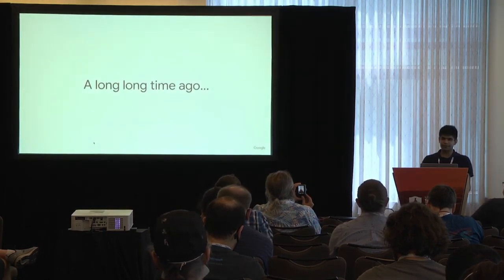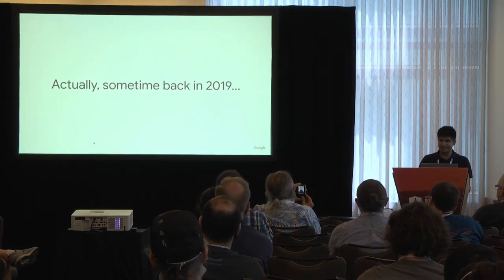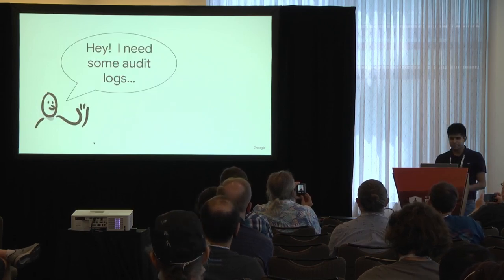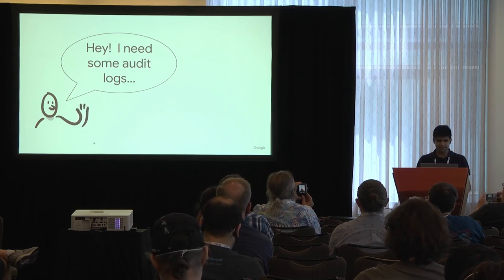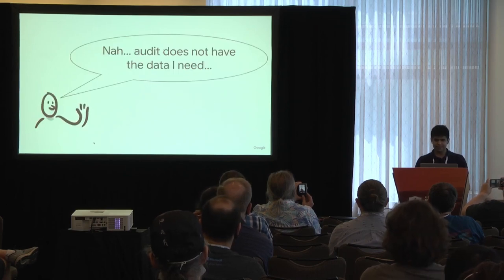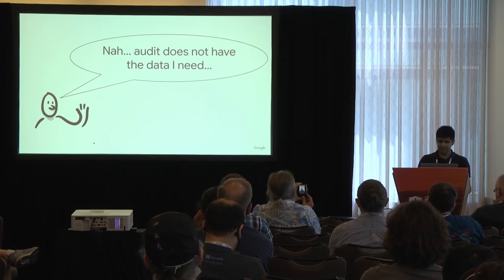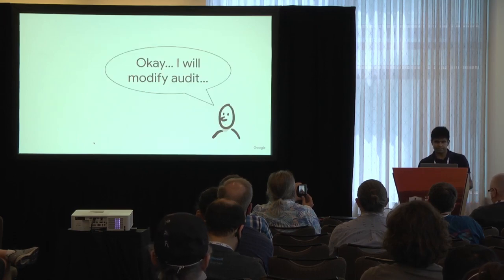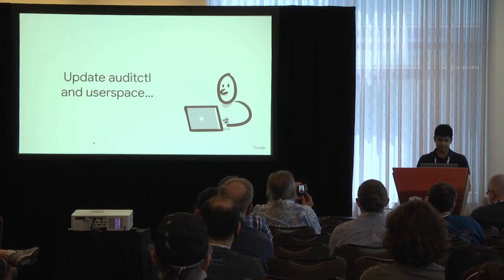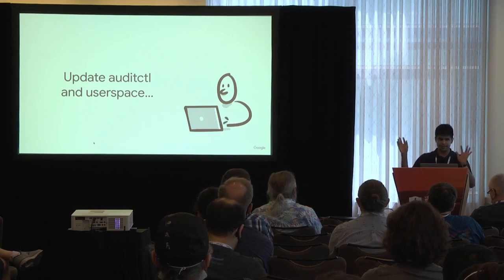So, a long, long time ago — well, sometime back in 2019 — a security analyst at Google came to me and said, 'We need some audit logs.' I said, 'Can't you use audit?' And the response was, 'No, audit doesn't have the data I need.' So I said I'd modify audit, patch it in the kernel, update auditctl and all the userspace stuff and all our infrastructure that reads audit files.